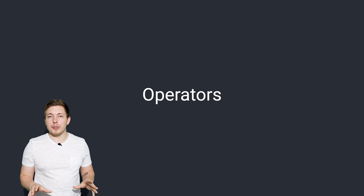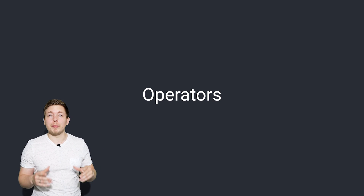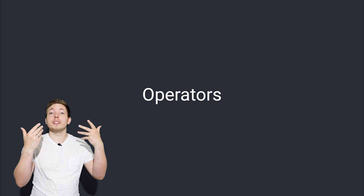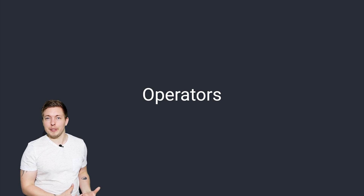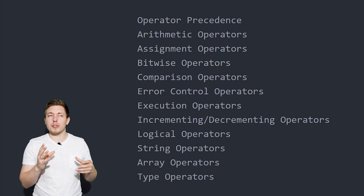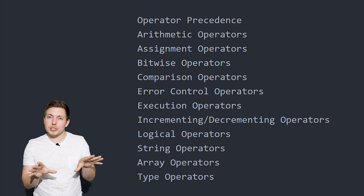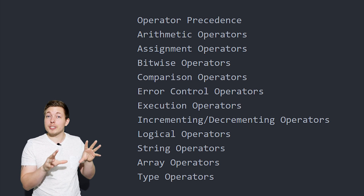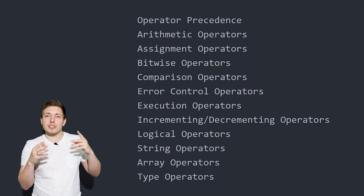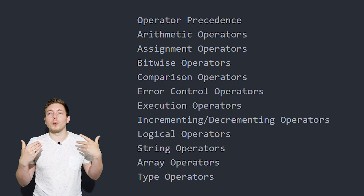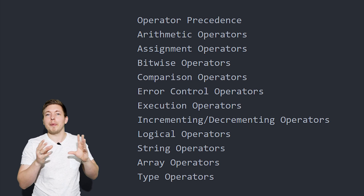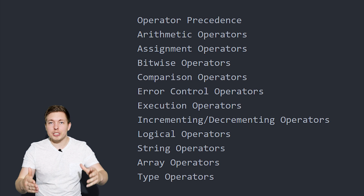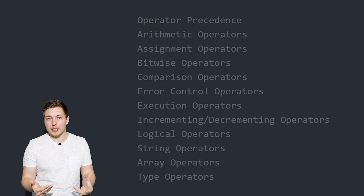When it comes to operators inside PHP, we use them in order to perform operations inside PHP. We have many different types of operators in PHP — about 12 different ones — but we're not going to talk about all of them in this episode because it might overwhelm you, and you might not understand what purpose some of them have until we get a little bit later into the course.